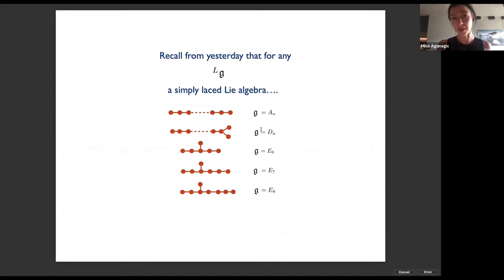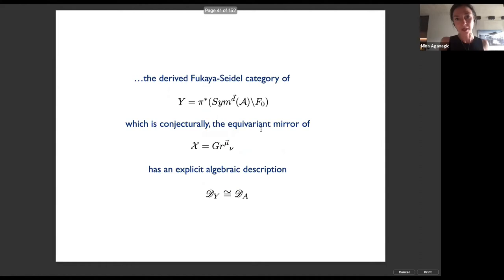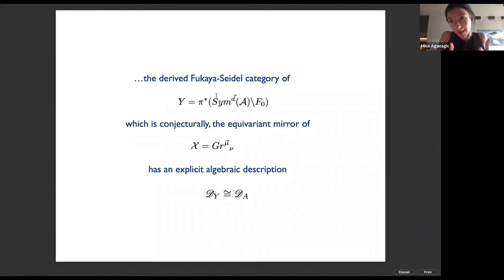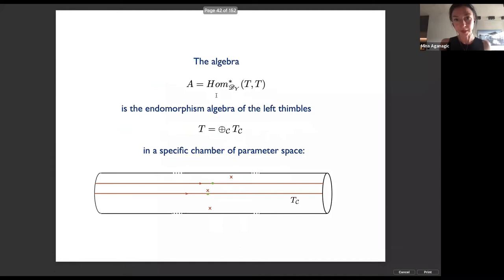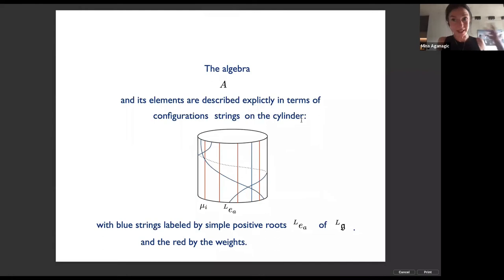This was our simple running toy example, but yesterday we found a general algebra corresponding to general Y associated with arbitrary simply-laced Lie algebras. The derived Fukaya-Seidel category of Y dual to big X — the monopole moduli space — has an explicit algebraic description. The algebra is the endomorphism algebra of the Lefschetz thimbles in a specific chamber of parameter space. You can think of it as a path algebra of a quiver, except the quivers get really complicated, so it's better to describe the algebra in terms of configurations of strings on a cylinder.